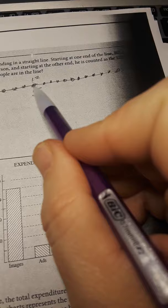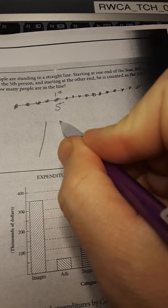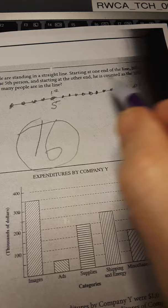Thirteen, fourteen, fifteen, sixteen. Sixteen people are in line. Fifth from the back and twelfth from the front. Sixteen. Next one.